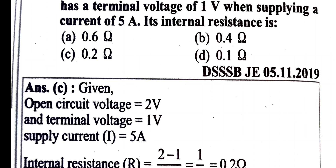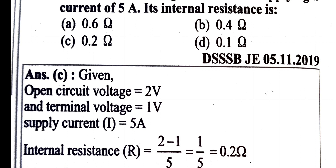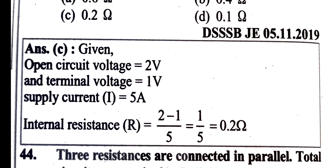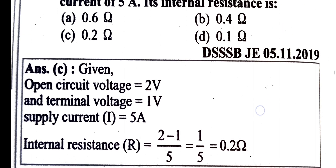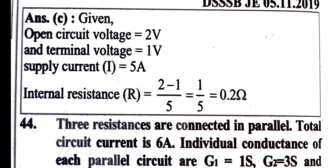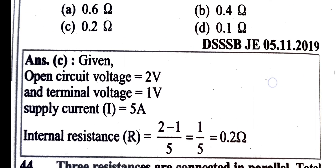Internal resistance: open circuit voltage is 2 V, terminal voltage is 1 V, supply current is 5 A. Internal resistance equals (2 − 1) by 5, which is 0.2 ohm.